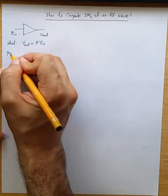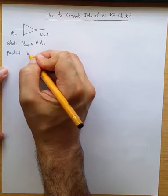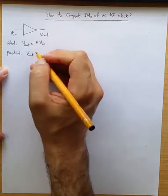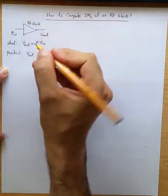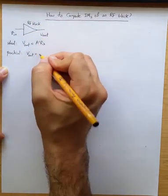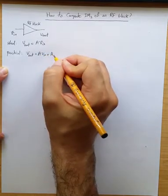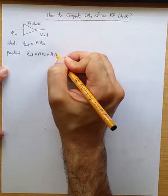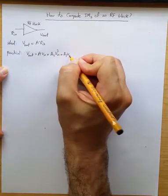But in practice what we get is something including the non-linearities of this RF block. So what you get is V_out is a1*V_in plus let's say a2*V_in squared plus a3*V_in cubed and so on.